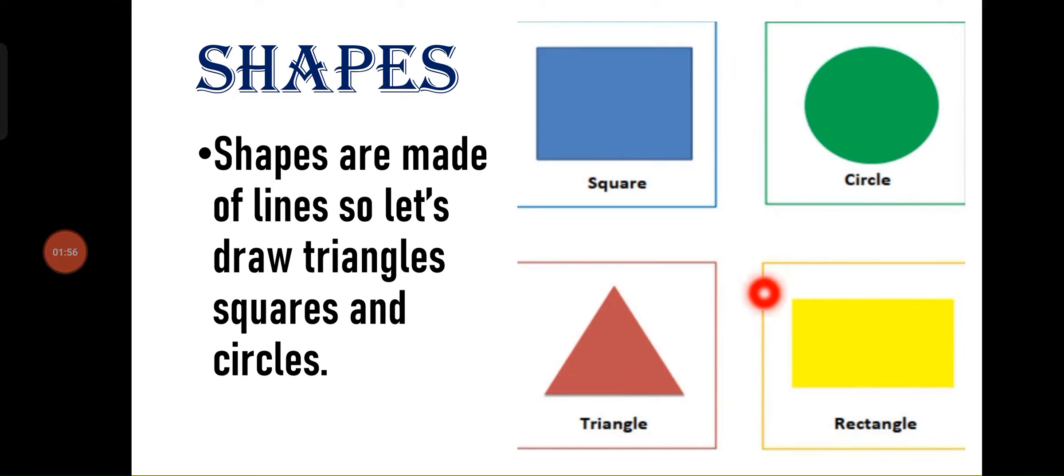Now children, as you all know the different shapes, square, circle, triangle, rectangle, shapes are made of lines. So let's draw triangles, squares and circles. So using the lines, we have made these shapes, squares, triangles, rectangles and circles.